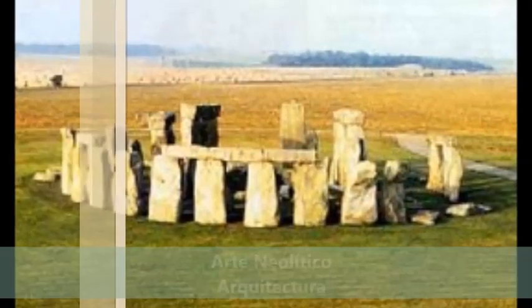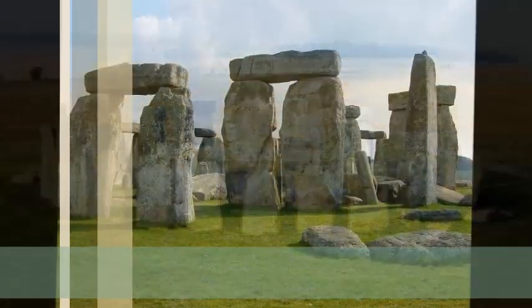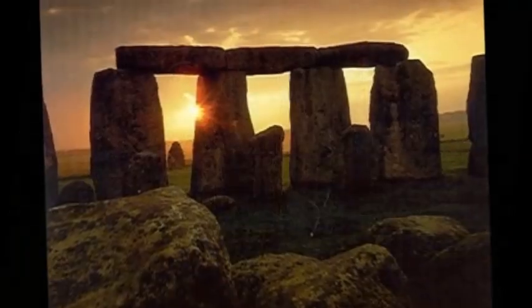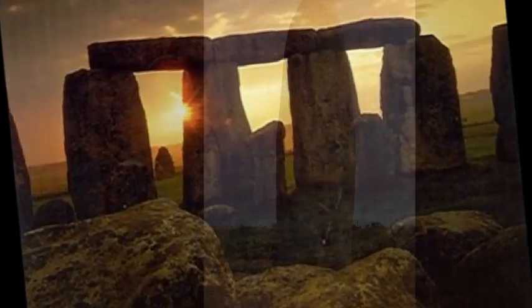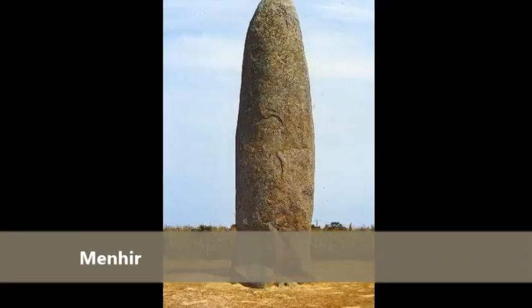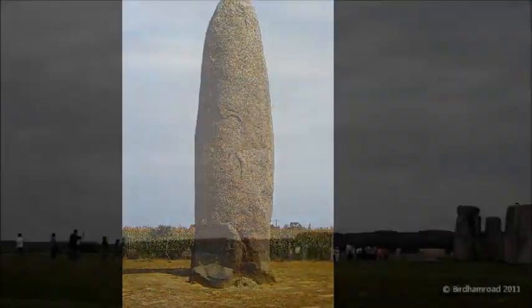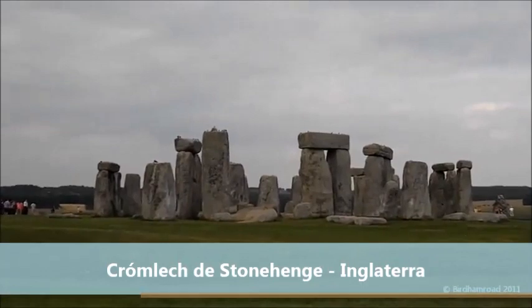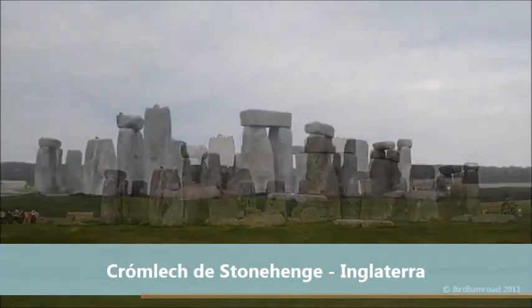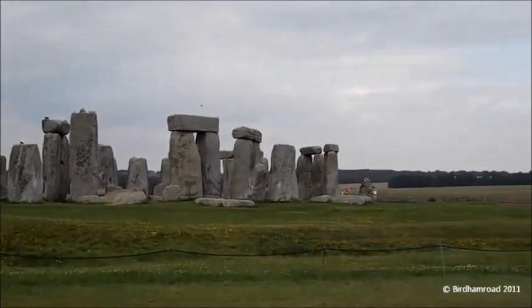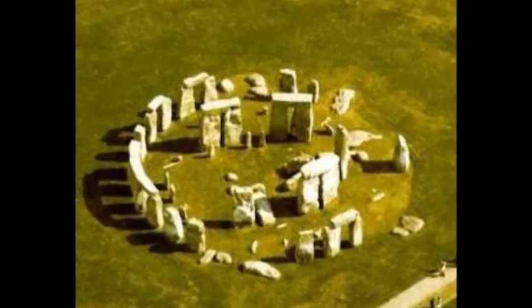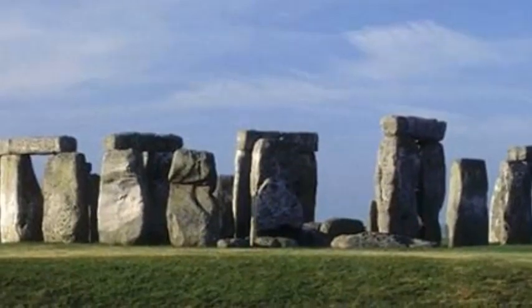Arte Neolítico — Arquitectura. La finalidad de estas construcciones era exclusivamente de carácter funerario: tumbas. El más sencillo de los monumentos son los menhires, una sola pieza de piedra monolítica colocada verticalmente en el suelo. Colocados en hilera, formaban los alineamientos, y en forma circular los llamados crómlechs, como el de Stonehenge, Inglaterra, que consistía en un círculo de piedras levantadas a espacios regulares que sostienen losas horizontales.